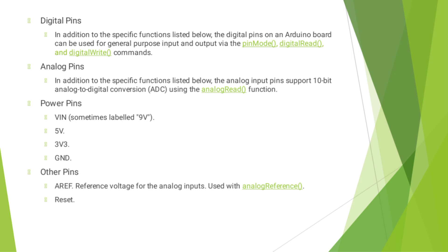For digital pins: in addition to specific functions, the digital pins on the Arduino board can be used for general purpose input and output via the pinMode, digitalRead, and digitalWrite commands. For analog pins: in addition to specific functions, the analog input pins support 10-bit analog to digital conversion, that is ADC, using the analogRead function. For power pins: VIN, sometimes labeled 9V, 5V, 3.3V, and GND. Other pins include AREF, which is the reference voltage for analog input used with analogReference, and the reset pin.